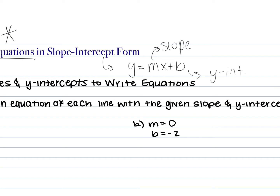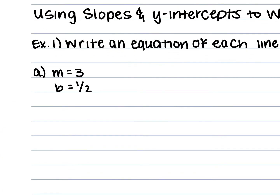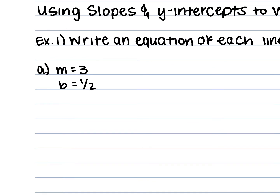So we need to write each of these in slope-intercept form. We're given m and we're given b. Who thinks they can come up with the equation for letter A? AJ — three plus one-half. You're missing something, Caitlin. The x — it needs to be three x plus one-half. M goes next to the x, and your b value goes at the end as a constant. This tells me my slope is three and my y-intercept is zero comma one-half.